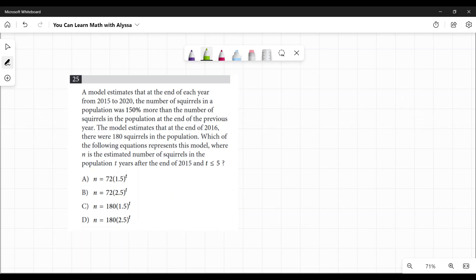A model estimates that at the end of each year from 2015 to 2020, the number of squirrels in a population was 150% more than the number of squirrels in the population at the end of the previous year. The model estimates that at the end of 2016, there were 180 squirrels in the population. Which of the following equations represents this model where n is the estimated number of squirrels in the population t years after the end of 2015 and t is less than or equal to five? It's a lot to unpack here.